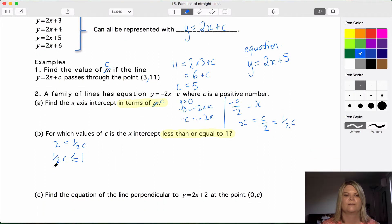So we just need to solve this. It's just solving an inequality. Let's get rid of this half. We can multiply by 2. There we go. For what values of c is the x-intercept less than or equal to 1? c is less than or equal to 2.